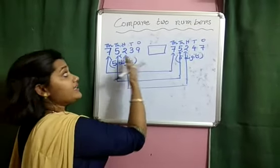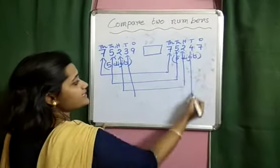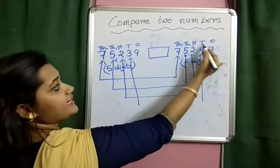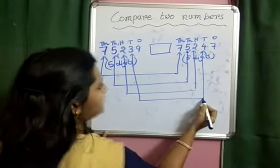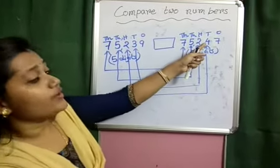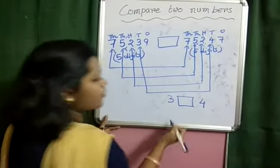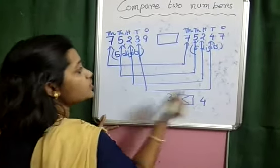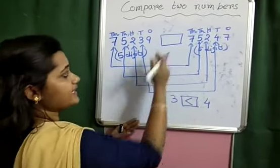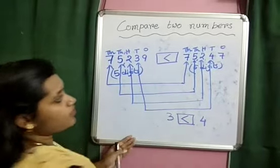May we say the two numbers are equal? No, because we need to check the next highest place. The next highest place is the 10s place. At the 10s place, in the first number 3 is present, and in the second number 4 is present. Comparing 3 and 4 — the digits are different. 3 is smaller than 4, so stop comparing. This number is smaller than this number.